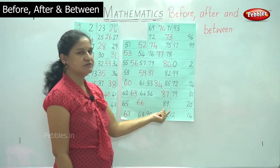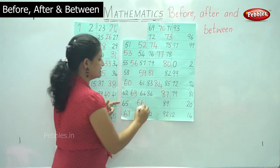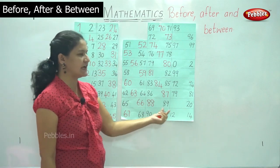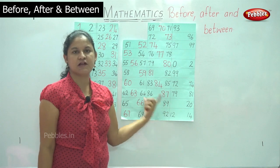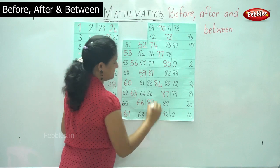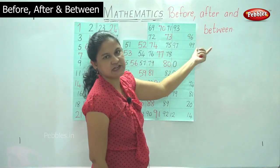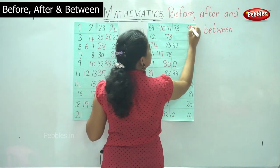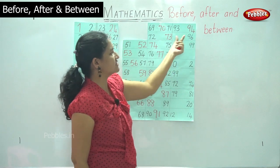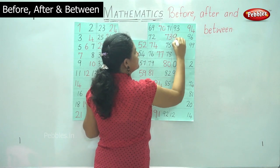Then we have number eighty-nine, and what comes before eighty-nine is eighty-eight. Then we have the numbers ninety and ninety-two, and what number comes between these two numbers is number ninety-one. Then we have ninety-three, and what comes after ninety-three is number ninety-four. We have number ninety-six, and what number comes before ninety-six? It is number ninety-five.